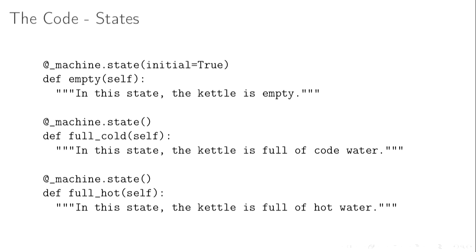We declare the three states we've got. We don't actually have any code in these states — they are just functions there as reference points for the library. We've got empty, full of cold water, and full of hot water. We use the machine decorator to declare them as states. The only interesting one is initial equals True. As I said at the start, all state machines have to have a starting state. If you try to instantiate any Automat state machine without a start state, it won't let you — you must have one and only one start state.